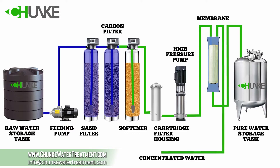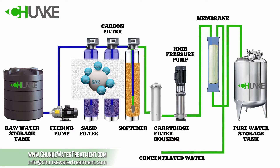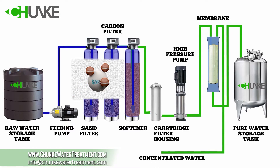Third, water goes to the water softener to remove hardness. There is ion exchange resin in the softener tank. The ion exchange resin exchanges sodium with calcium and magnesium, which are the minerals that give hardness to water.